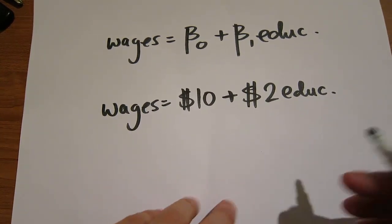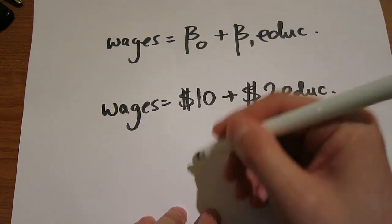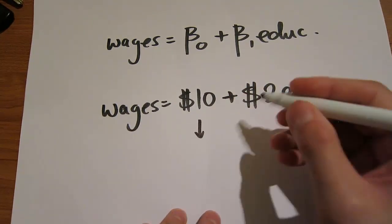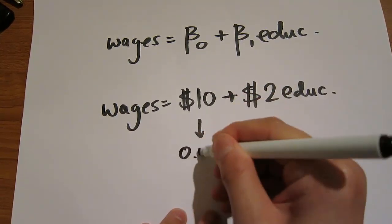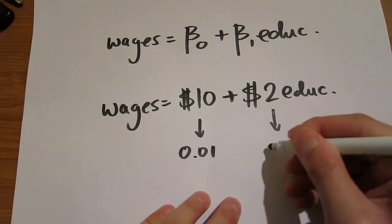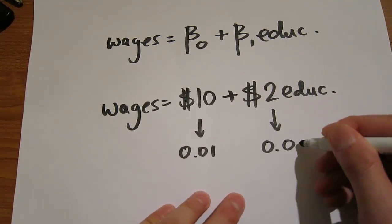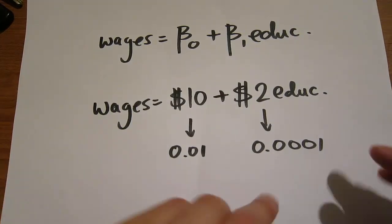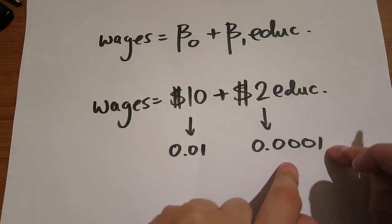Now suppose we know the p-values of these beta estimates. The p-value here is 0.01, and the p-value here is 0.0001.